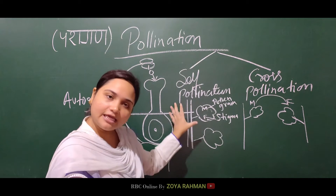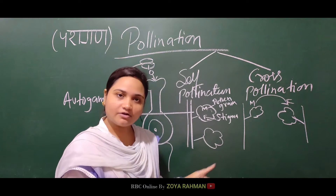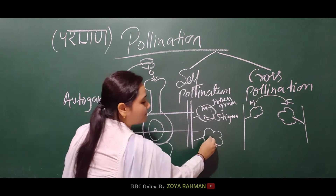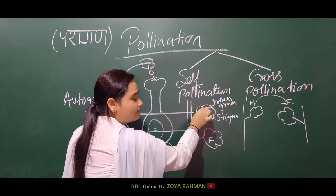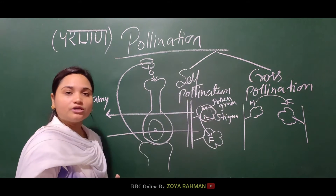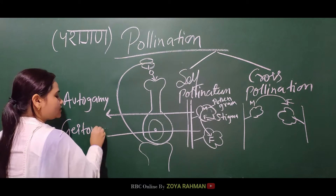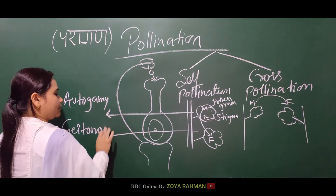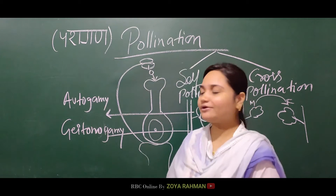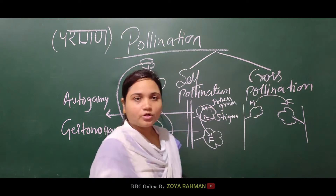The plant is the same, but the flowers are two different flowers. So if pollination occurs between two different flowers on the same plant, we call it geitonogamy. So there are two subtypes of self-pollination: autogamy and geitonogamy.